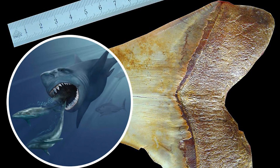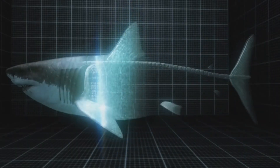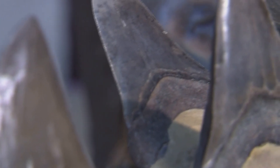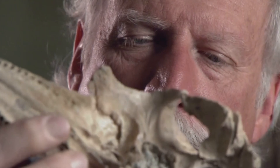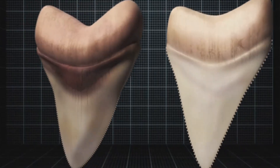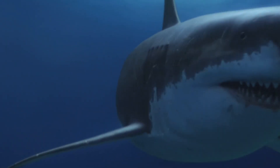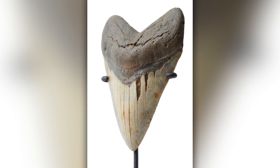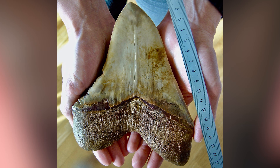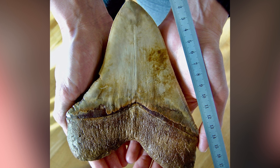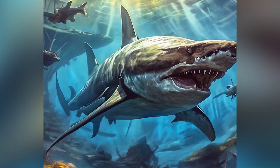All we know about Megalodon is based on fossils of its teeth and fragmentary remains of its spine. Since the cartilaginous skeletons of sharks are poorly preserved, scientists do not have complete remains of Megalodon. However, using its teeth it was possible to reconstruct its size and behavior. Megalodon teeth are among the most recognizable fossils, found all over the world — from North and South America to Europe, Africa, and Asia — helping us understand the distribution of Megalodon and its evolutionary relationships with modern sharks.